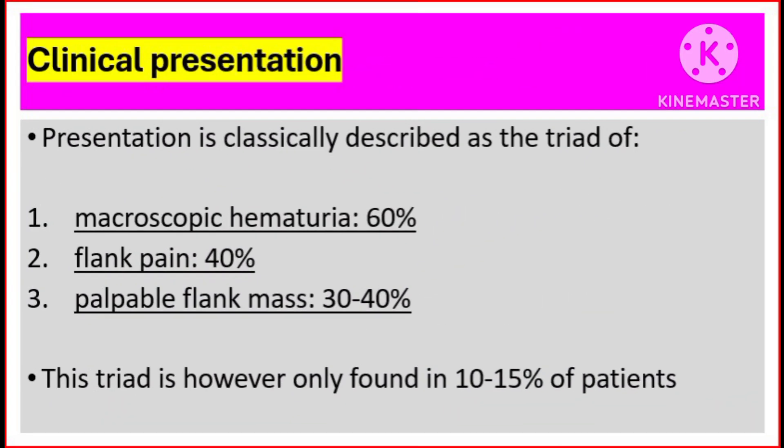Clinical presentation. Presentation is classically described as the triad of: number one, microscopic hematuria at 60%; number two, flank pain at 40%; and number three, palpable flank mass from 30 to 40%. This triad is, however, only found in 10 to 15% of patients.